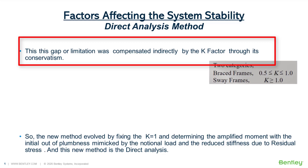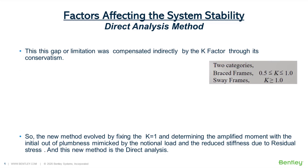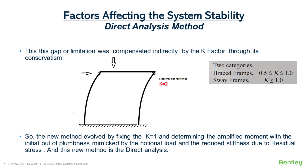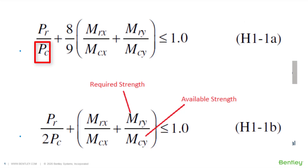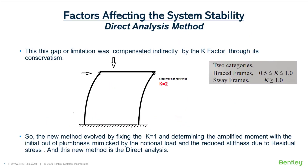We were determining the member capacity correctly considering these factors, but we were not considering their effect on stiffness while analyzing the structure to determine the required forces. So performing the analysis to determine required strength was not compensating the determination of available strength. This gap was compensated indirectly by the K factor through its conservatism. In a simple frame whose columns are moment-released and prone to sidesway, creating P-delta secondary moment, the effective length method uses K = 2 to decrease buckling load capacity due to sidesway action.